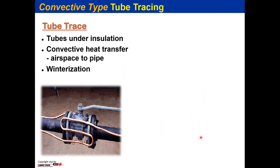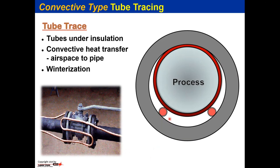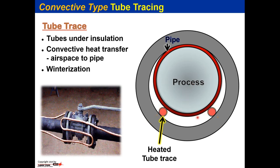The simple convective tube tracer — stainless or copper — runs down the pipe and around valves. In cross section, there's a very small contact surface where the tube touches the pipe, and heat convects through the air space to keep the process from freezing. We have the product pipe, the heated tube tracer convecting heat, and insulation surrounding everything to keep that heat from radiating outward.